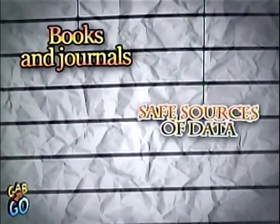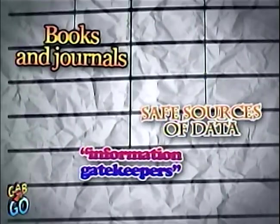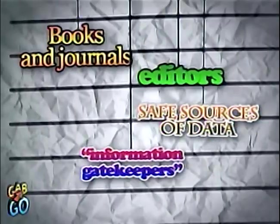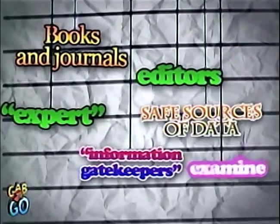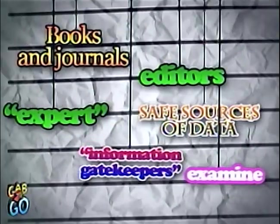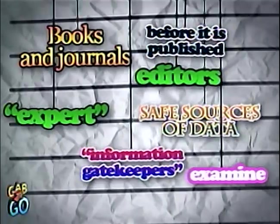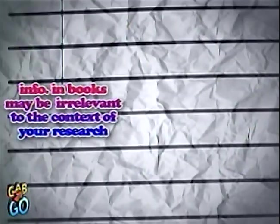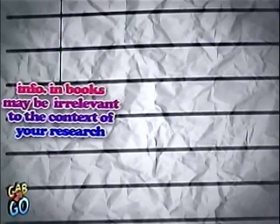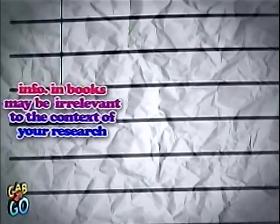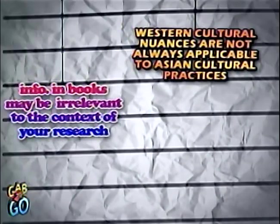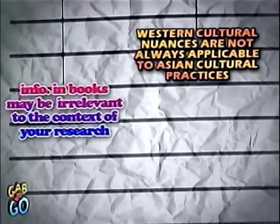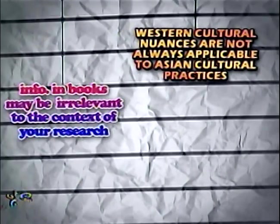Books and journals are usually safe sources of data because they have information gatekeepers — these are the editors and expert consultants who examine a manuscript before it is published in a journal or book. Sometimes, though, information in books may be irrelevant to the context of your research. Western cultural nuances are not always applicable to Asian cultural practices.